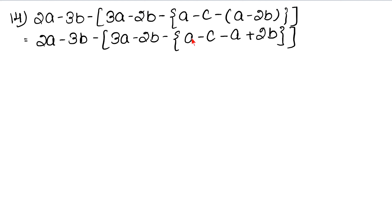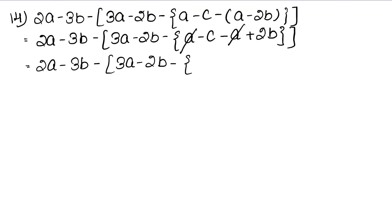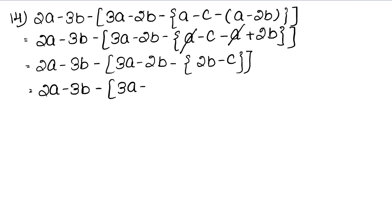After opening the small bracket, we get: 2A minus 3B minus 3A minus 2B minus curly bracket A minus C minus, and with sign change inside: minus A plus 2B, then curly bracket and bigger bracket. Now see if there are like terms. A and minus A cancel. We then have: 2A minus 3B minus 3A minus 2B minus curly bracket 2B minus C.